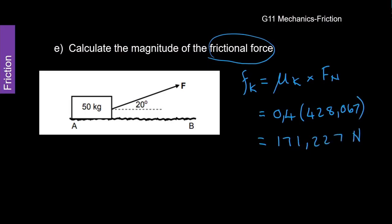Okay, we pop that into the calculator and we get an answer of 171.227 newtons. Excellent. We want to say the direction of this. It is going to be opposite to motion. Okay. Very important.